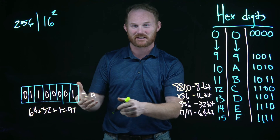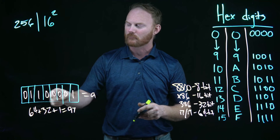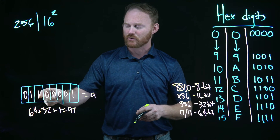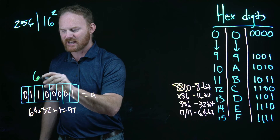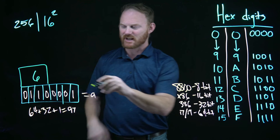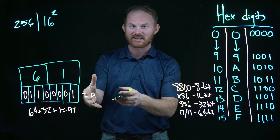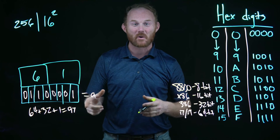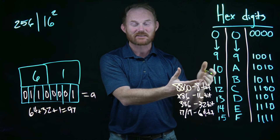Instead of looking at that ridiculous binary string, we grab the bits in pairs of four. For the binary 'a' — 0110 0001 — the first four bits 0110: zero plus four plus two equals six. The second four bits 0001: that's one. So the letter 'a' in hexadecimal is 61. That's awesome — that took almost no time compared to working through the full binary.